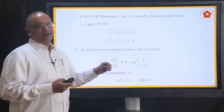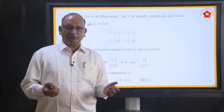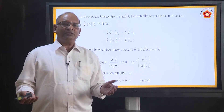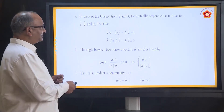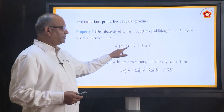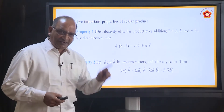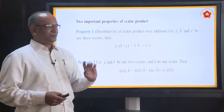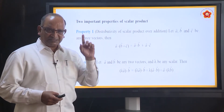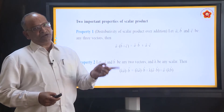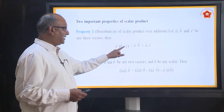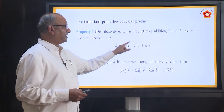Scalar product is commutative. What do you mean by commutative? A dot B is equal to B dot A — that is called the commutative property. Two important properties: this is called the distributive property of multiplication over addition. A dot (B plus C) is A dot B plus A dot C. Distribution of multiplication over addition.